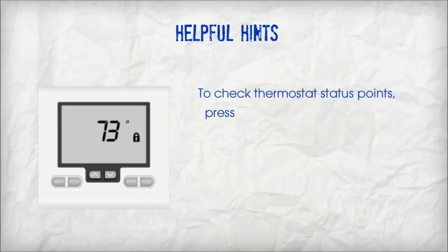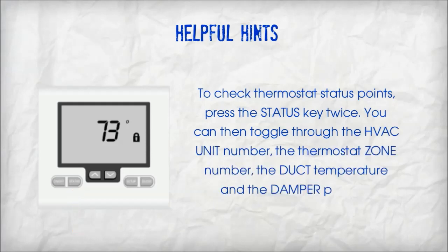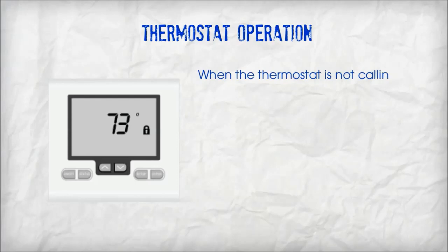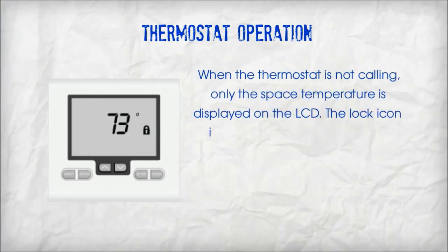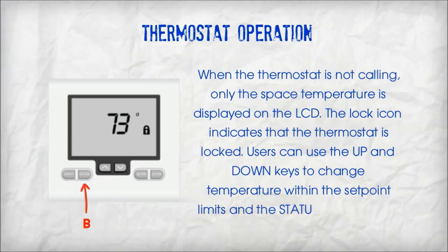To check thermostat status points, press the status key twice. You can then toggle through the HVAC unit number, the thermostat zone number, the duct temperature, and the damper position. When the thermostat is not calling, only the space temperature is displayed on the LCD. The lock icon indicates that the thermostat is locked. Users can use the up and down keys to change temperature within the set point limits and the status key to review the status points.